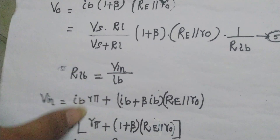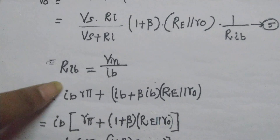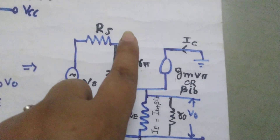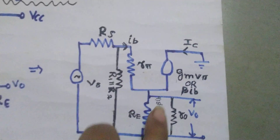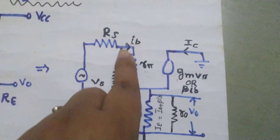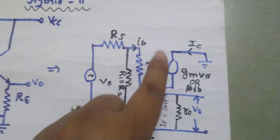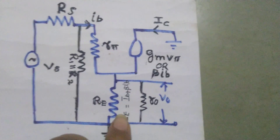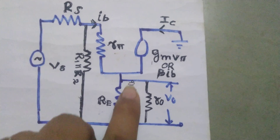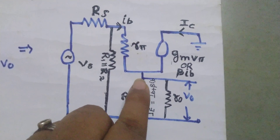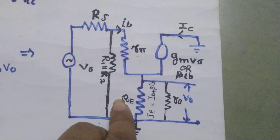To find VIN using KVL: VIN = IB·Rπ (voltage drop across Rπ) plus IE·RE (voltage drop across RE). Since IE = IB + β·IB, the second drop is (1+β)IB·(RE ∥ r0). So VIN = IB·Rπ + IB(1+β)·(RE ∥ r0).